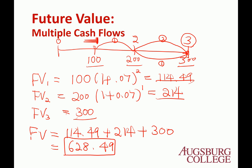So you will have $628.49 in year 3. The step is simple: separately treat each cash flow as a lump sum, compute the future value of each, and add them up. That is how to compute the future value of multiple cash flows.